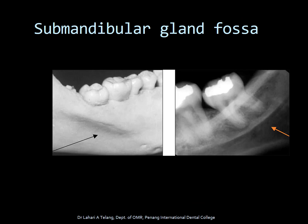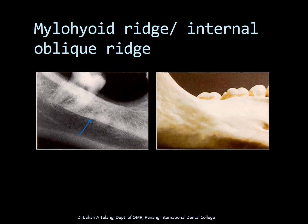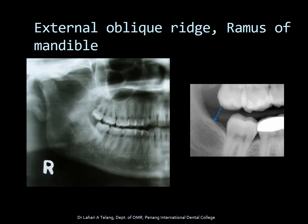The submandibular gland fossa is a depression in the bone lingual to the mandibular posterior region. It appears as a radiolucent area and is the area which houses the submandibular gland. Nutrient canals can be seen as radiolucent lines on radiographs, though not always visible. The mylohyoid ridge, also called the internal oblique ridge, is seen on the lingual surface of the mandible and superimposes over it. The external oblique ridge is an extension of the internal oblique ridge upwards to the ramus of the mandible, visible on all radiographs covering the posterior mandible and on panoramic radiographs.